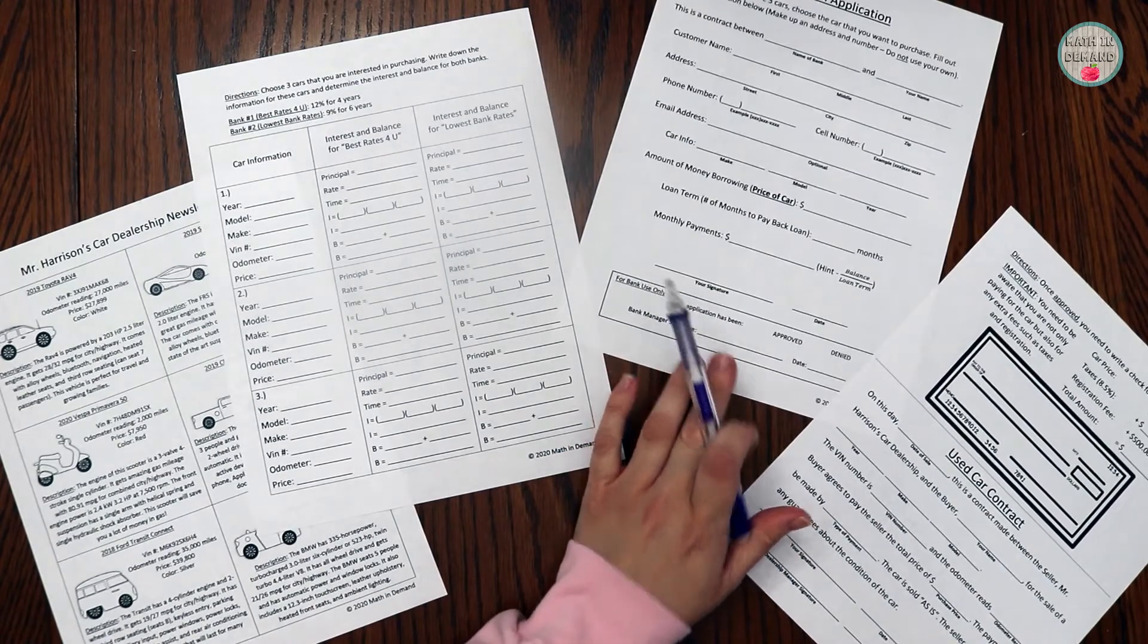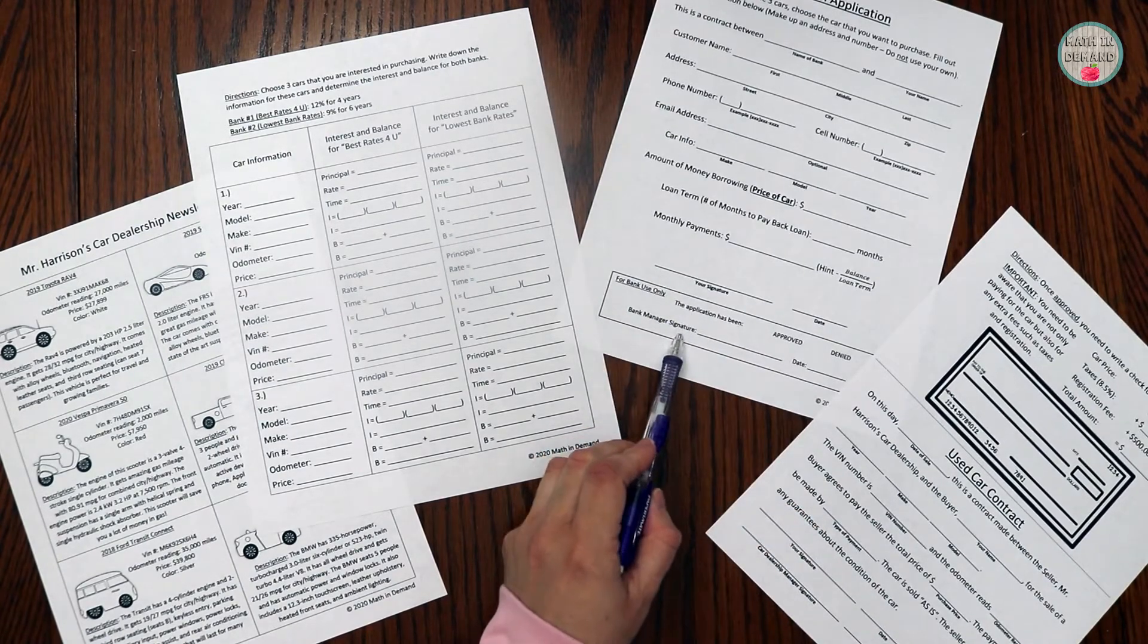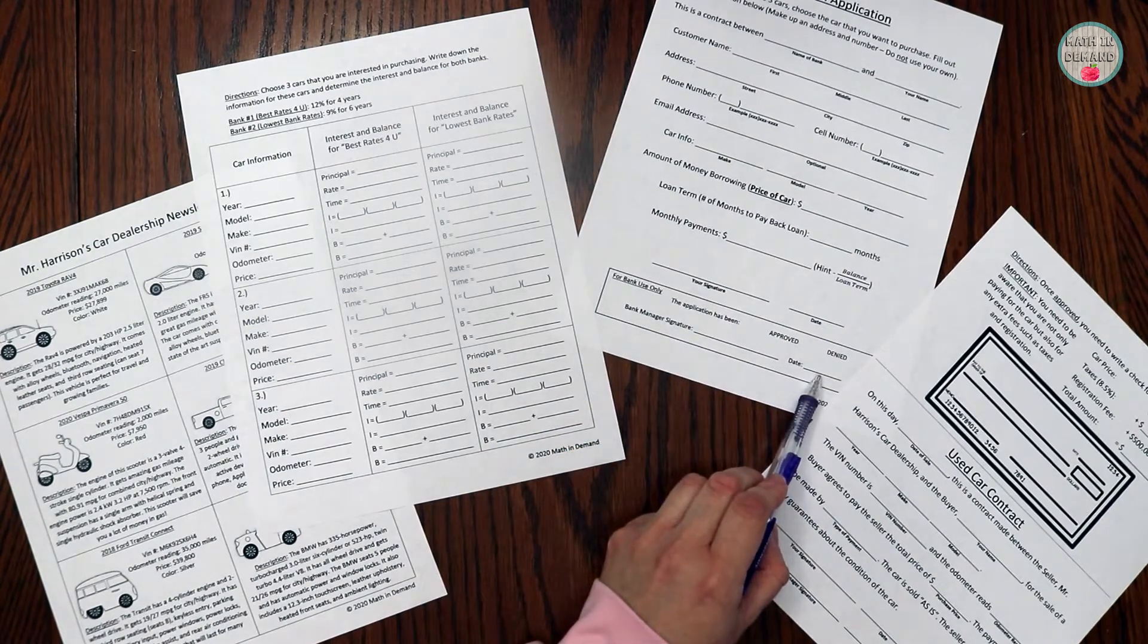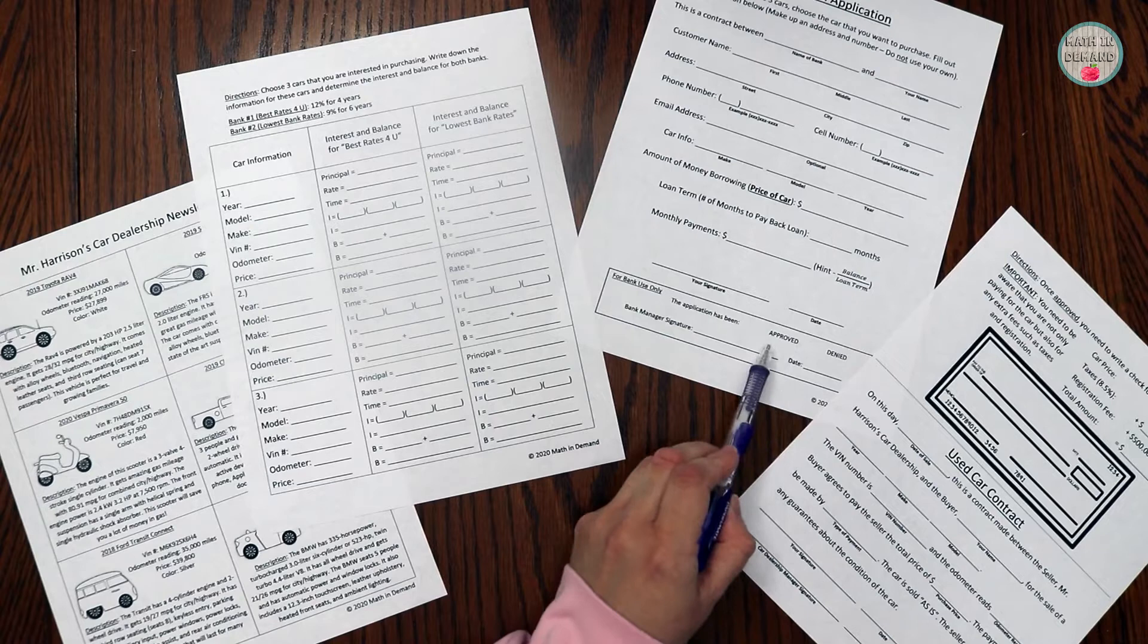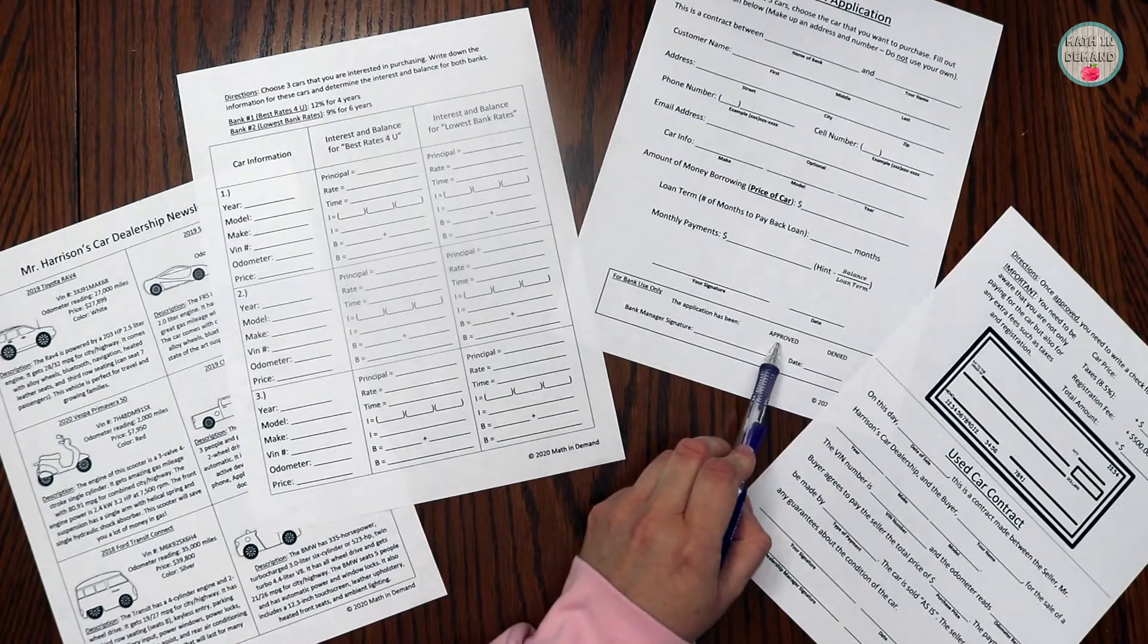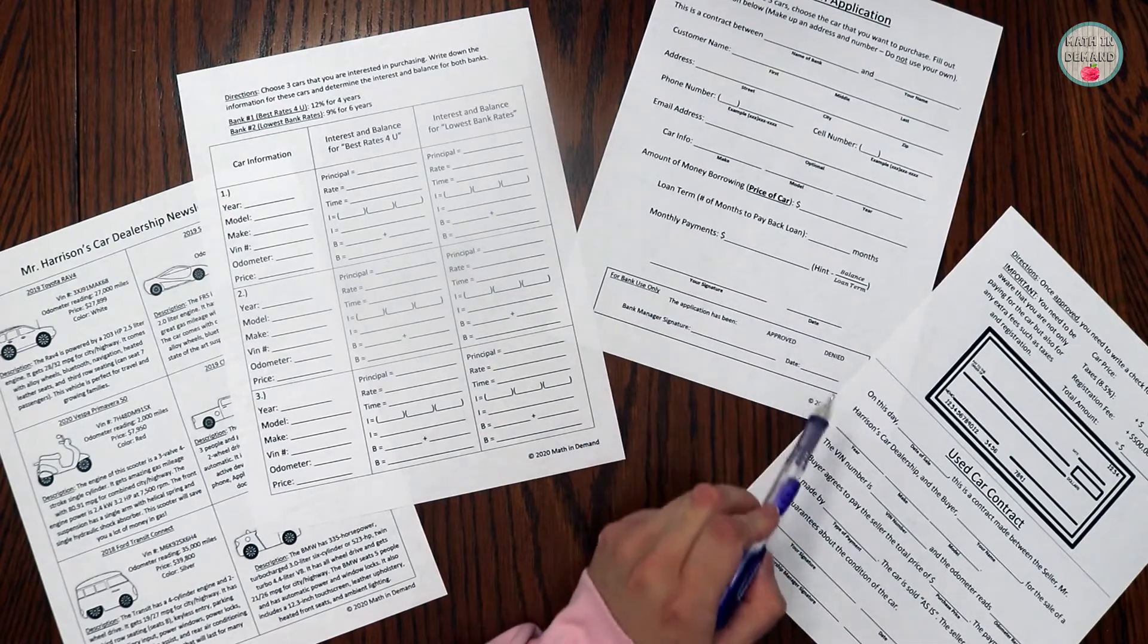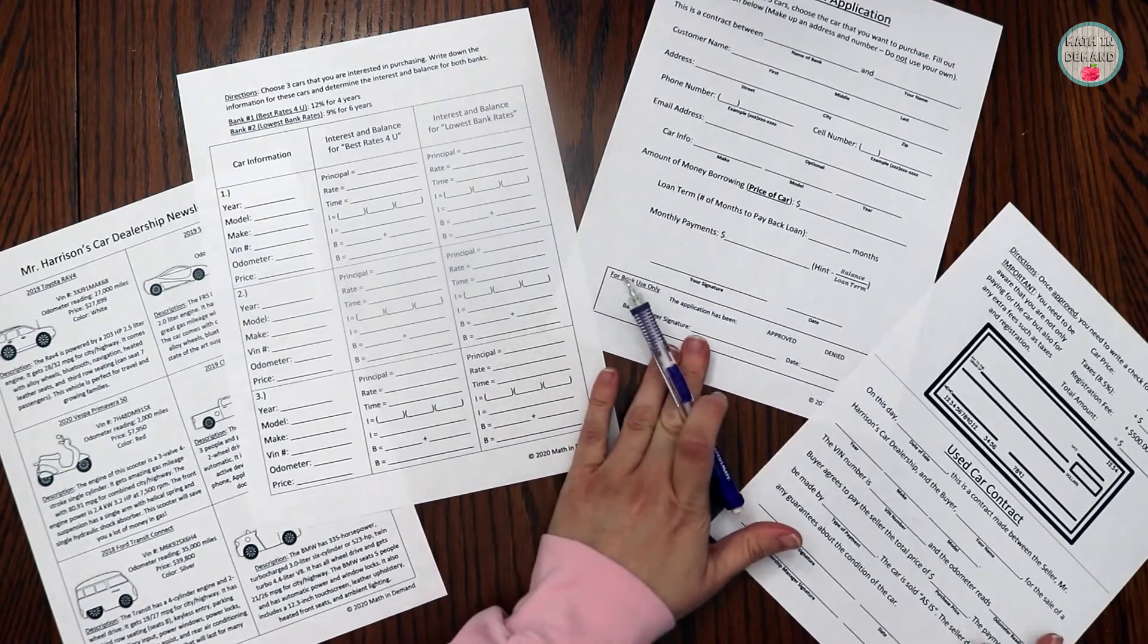The teacher is the bank manager and he or she will sign it and then date it. And they will also put if it's approved or denied. You will approve it if the monthly payments are correct. If it's incorrect, then you will deny it and the student will have to fix their work.